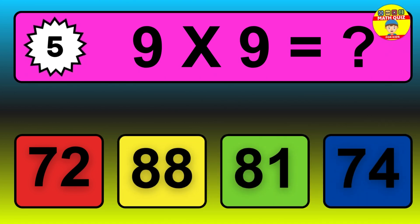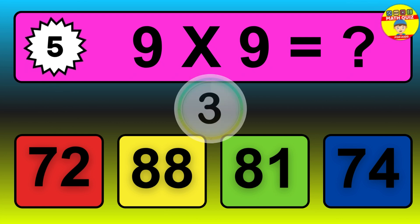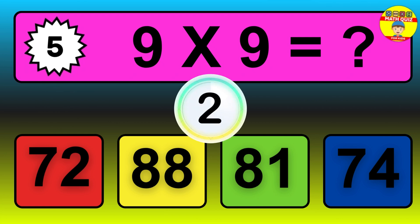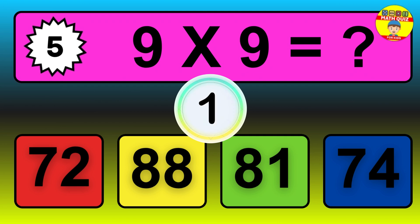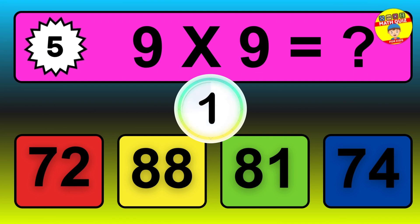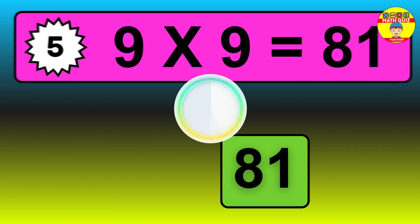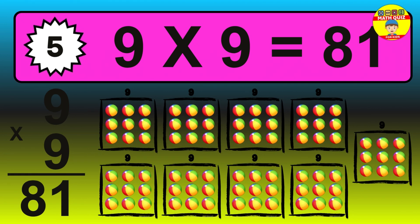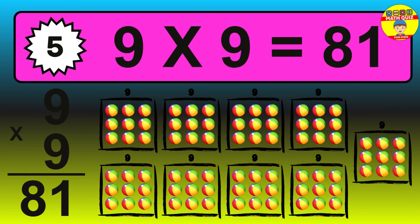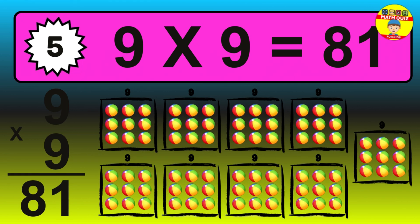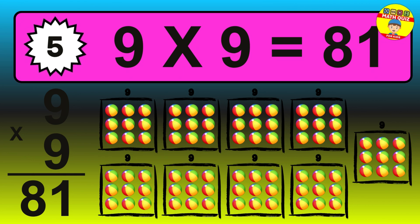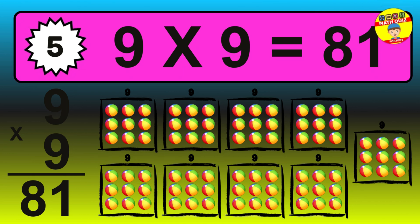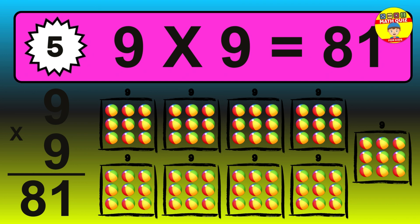Question 5. 9 times 9 equals what? The answer is 9 times 9 is 81. To calculate, we have 9 groups with 9 balls each one. So, how many balls do we have? 81 balls.